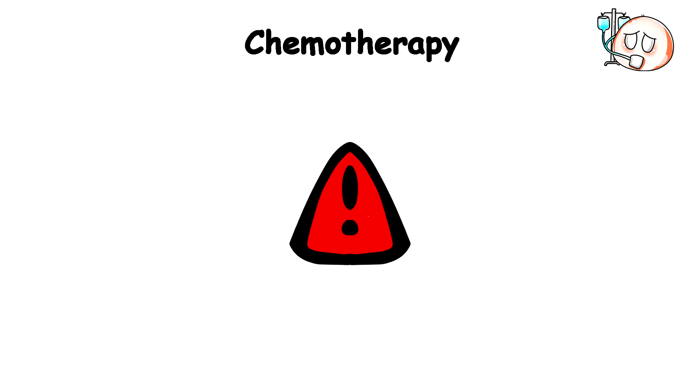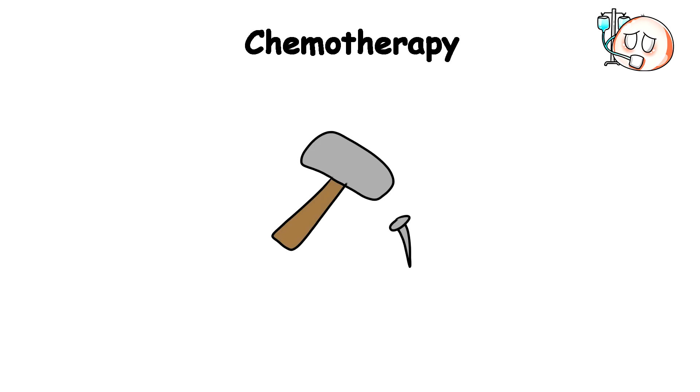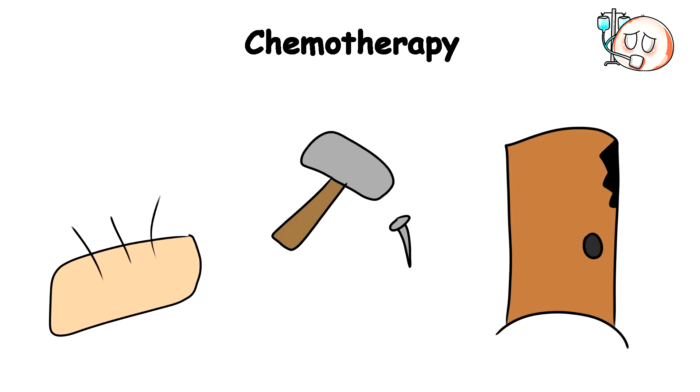Sometimes, chemotherapy is like hammering in a doornail, but because you feel the hammer might miss, you drone strike the area for good measure just to make sure. Yeah, you hammer in the doornail, but you also destroy the door, and in this case, these are your other cells like hair or skin, which gives chemo goers a ghostly look.